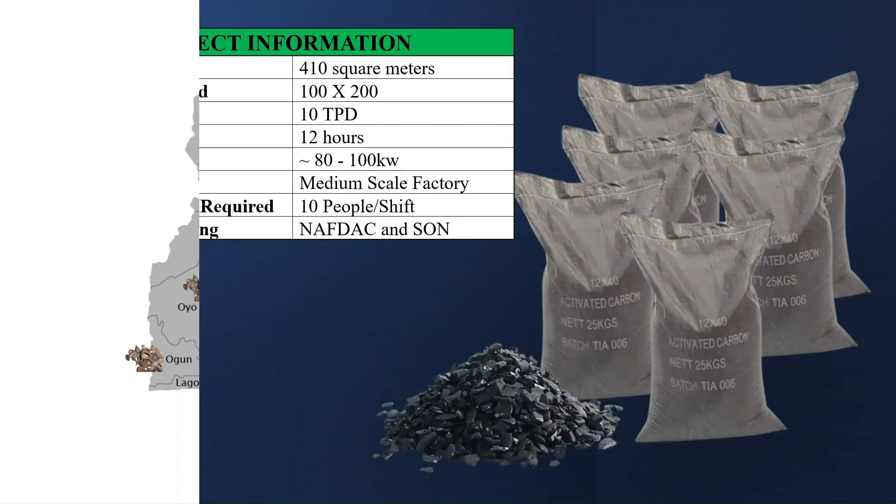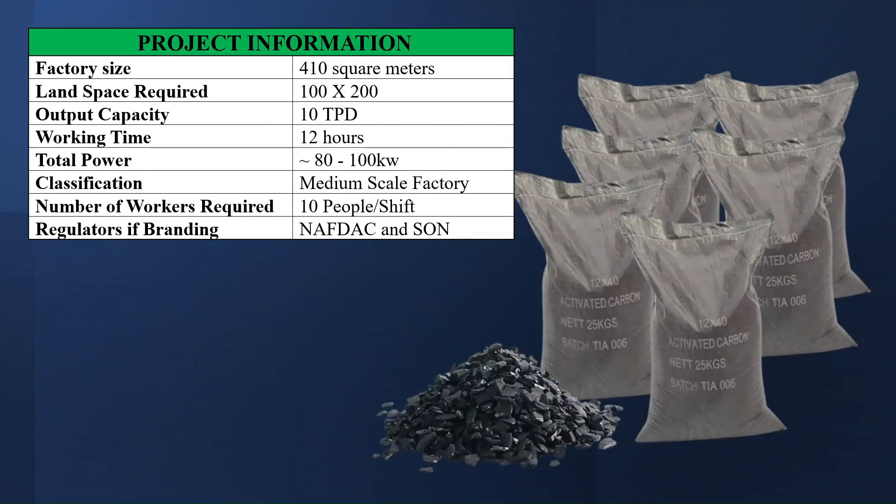Let's talk about the project information. The factory size required is 410 square meters. The land space required is 100 by 200. The output capacity is 10 tons per day. The working time is 12 hours. The total power required is between 80 to 100 kilowatts. Classification: medium scale factory. The number of workers required is about 10 people per shift. The regulators, if branding, are NAFDAC and SON — SON stands for Standard Organisation of Nigeria.